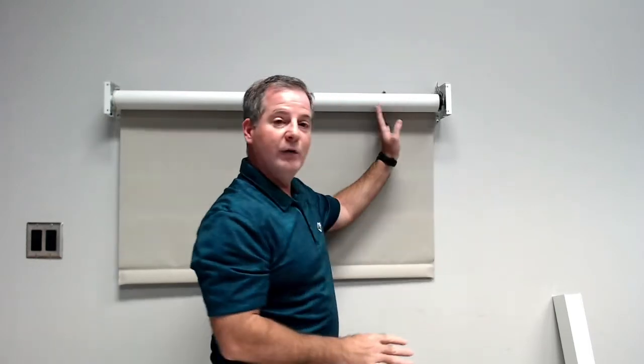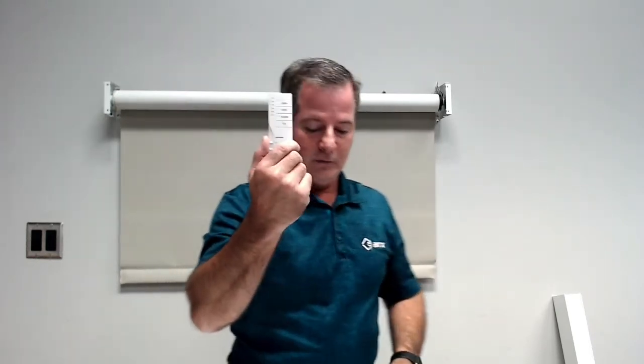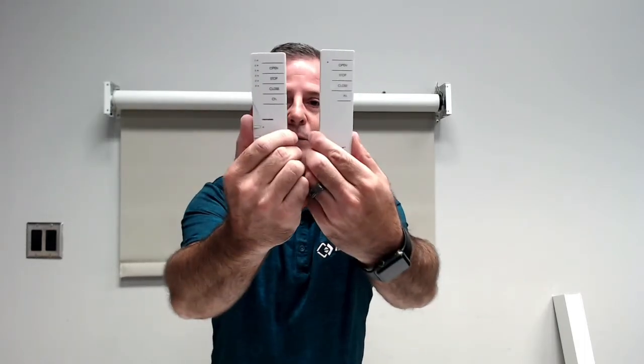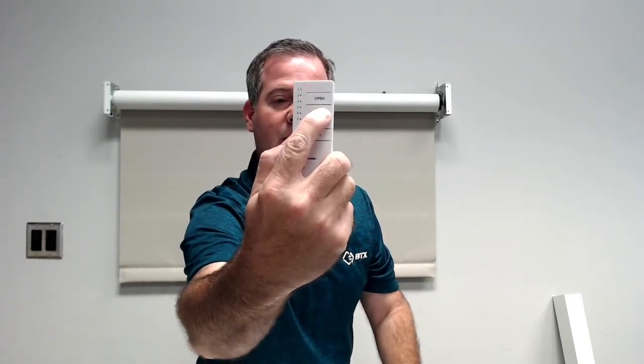Before you pair this particular unit, you must put this particular motor into a pairing mode, and that needs to be done with the original six channel or one channel remote. So here we go, since this was working on channel one, you're going to hold the stop button down with a fast flash until the motor jogs.